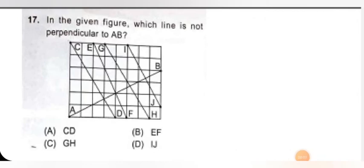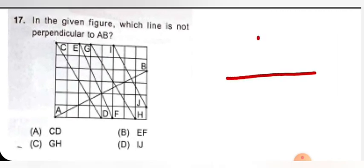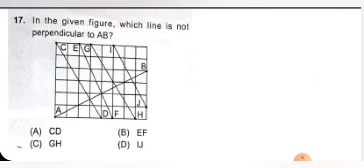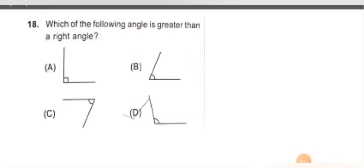Next question: in the given figure, which line is not perpendicular to AB? Perpendicular means there is a 90 degree angle formed. Observing one by one: here there is 90 degree so CD is not the right option. Now for EF: the angle is more than 90 degree and this angle is less than 90 degree, means option B is correct — EF line is not perpendicular to AB.